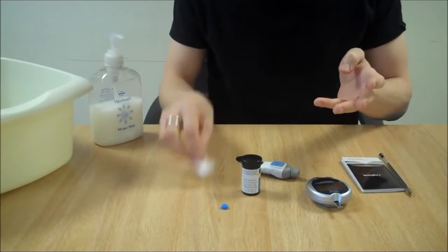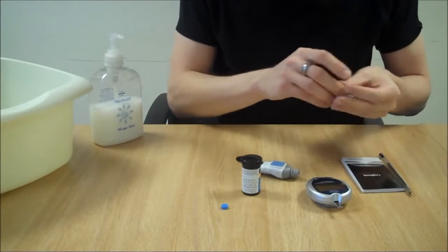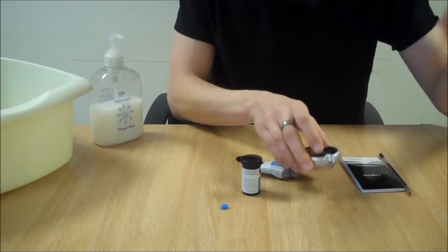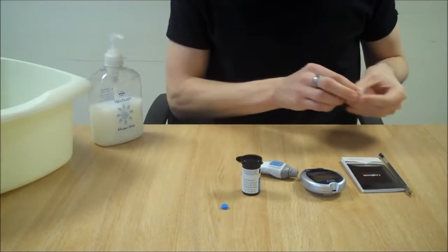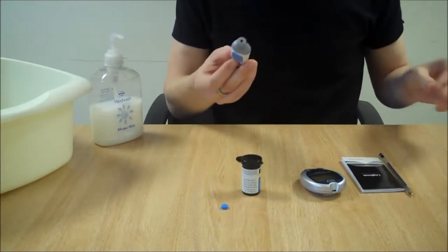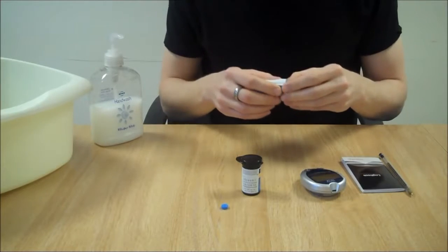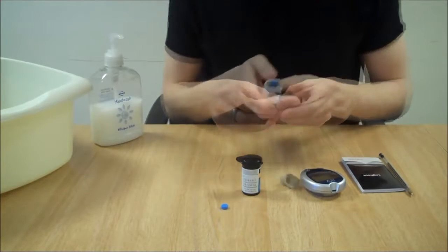Clean the blood off your finger. Remove the test strip which can be thrown away, and make sure that the lancet in the machine is disposed of in a sharps bin.